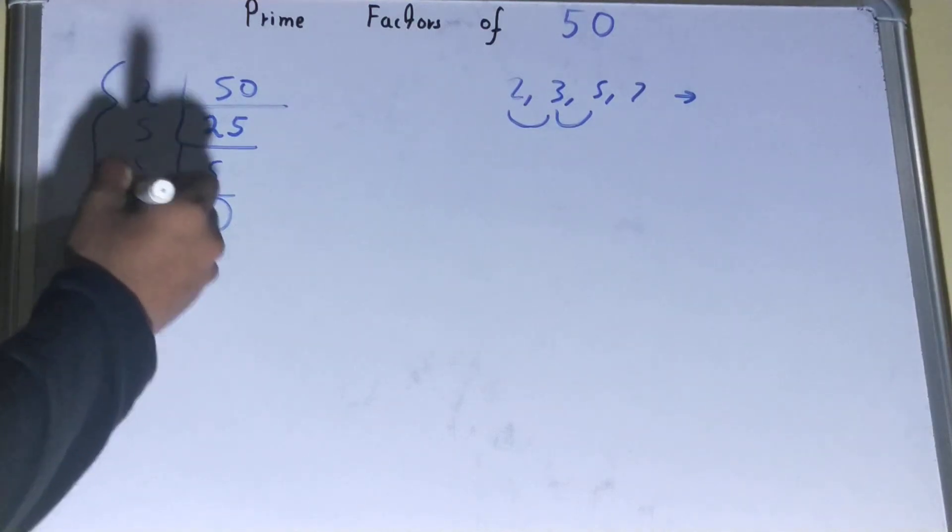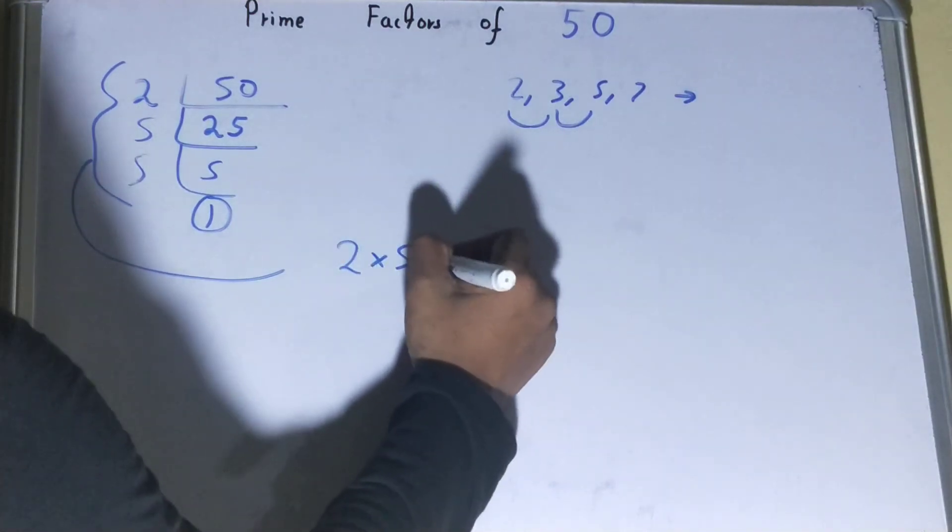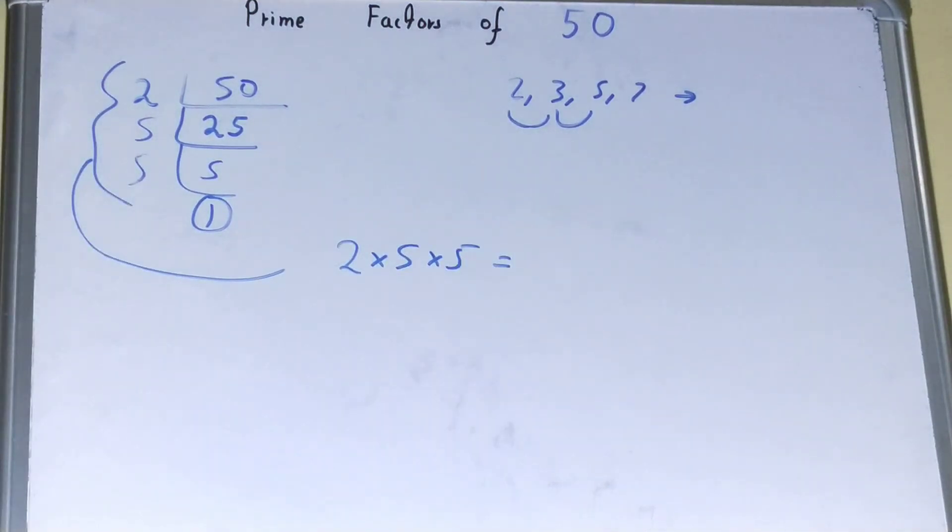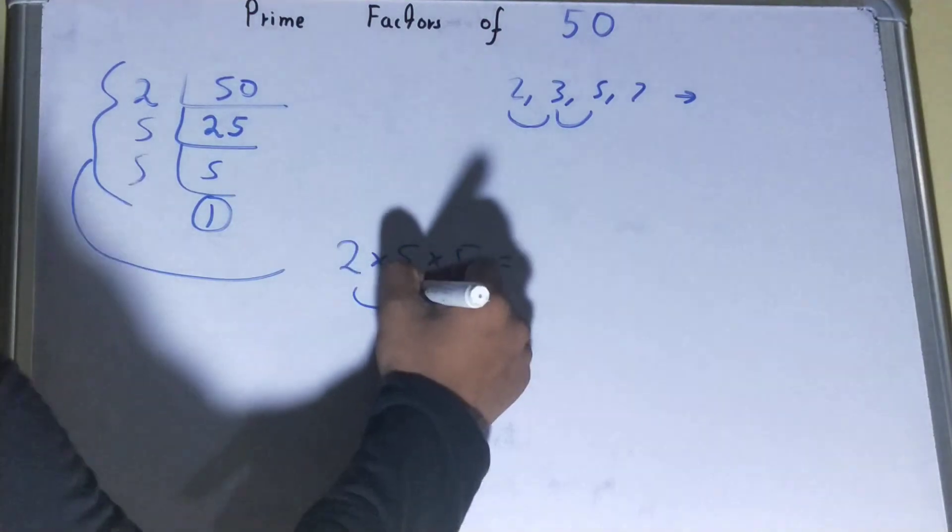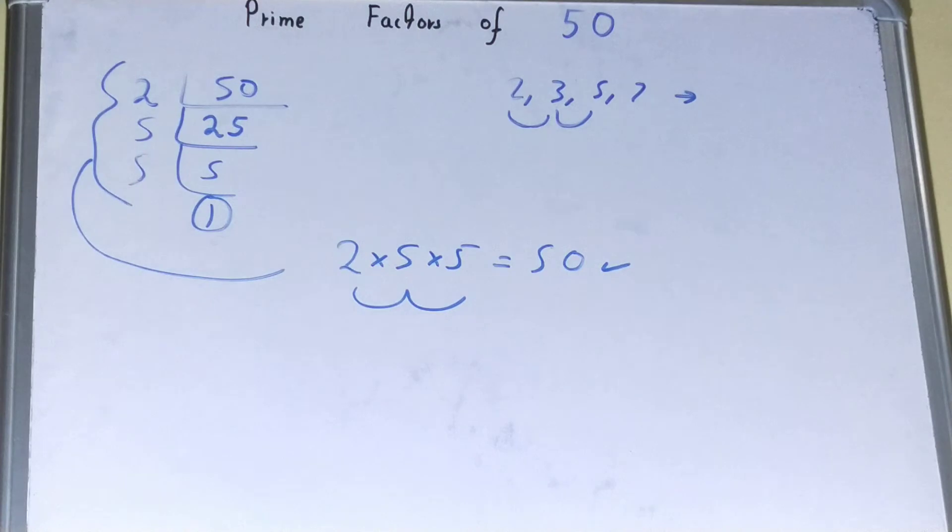And whatever you have on the left-hand side will be the set of prime factors for the number: 2 × 5 × 5. If you want to check whether it is right or not, you can multiply them. If you're getting the number back again, that means your calculation is correct. If not, you need to recheck.